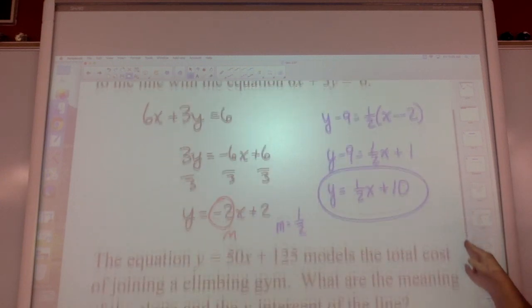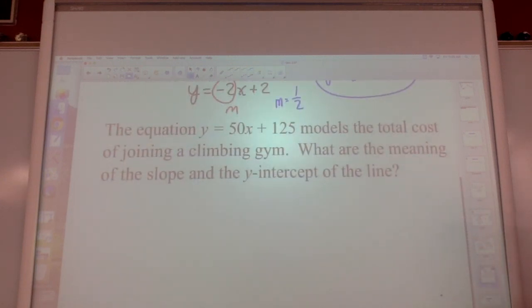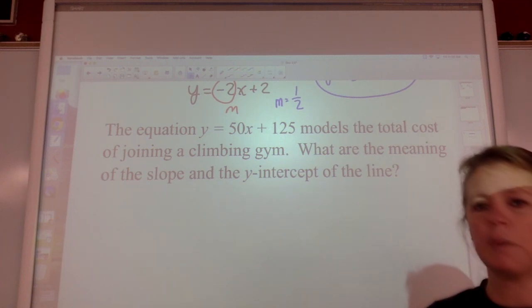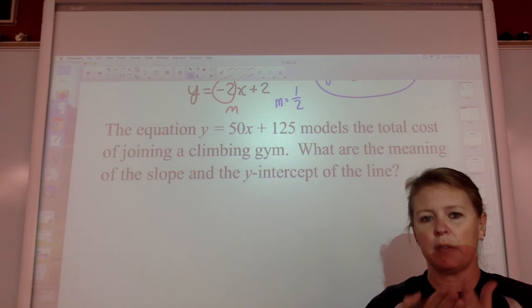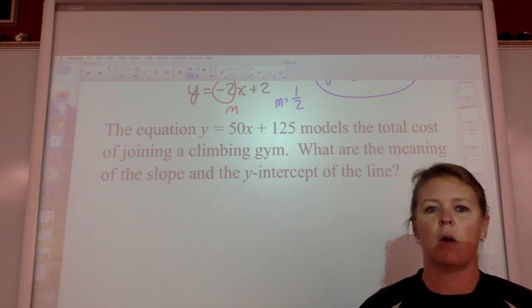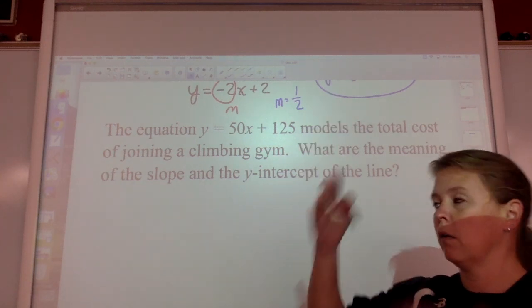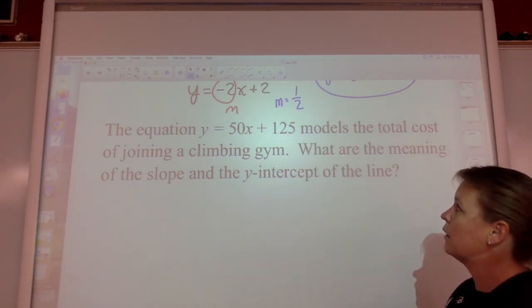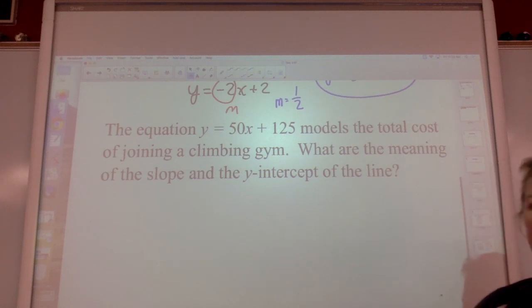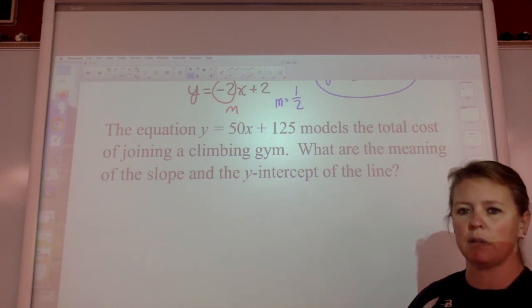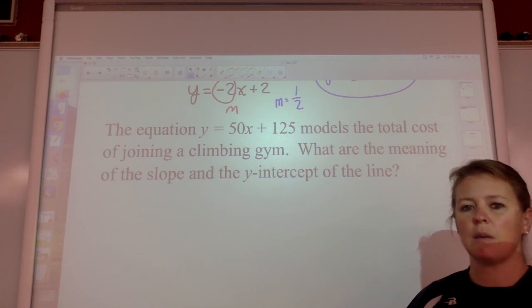And lastly, a little bit of a word problem. When are we ever going to use this in real life? That's when we're going to use this in real life, maybe, if you're going to join a climbing gym. But the idea is that slope and lines and intercepts aren't just there to represent a line on a graph. They always represent any relationship that's linear, that as x goes up, so does y go up, or one goes up, one goes down. The equation y equals 50x plus 125 models the total cost of joining a climbing gym. And now it's asking, what are the meaning of the slope and the y-intercept of the line?